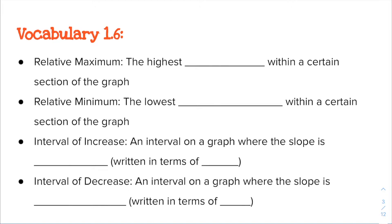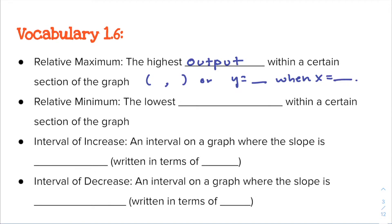The four terms are: relative maximum, relative minimum, interval of increase, and interval of decrease. Relative maximum is the highest output within a certain section of the graph. These can be written two ways: as ordered pairs, or as y equals something when x equals something — same information, just formatted two different ways. Relative minimum is the lowest output within a certain section of the graph, and can also be written as an ordered pair or as a y value when x equals a certain number.